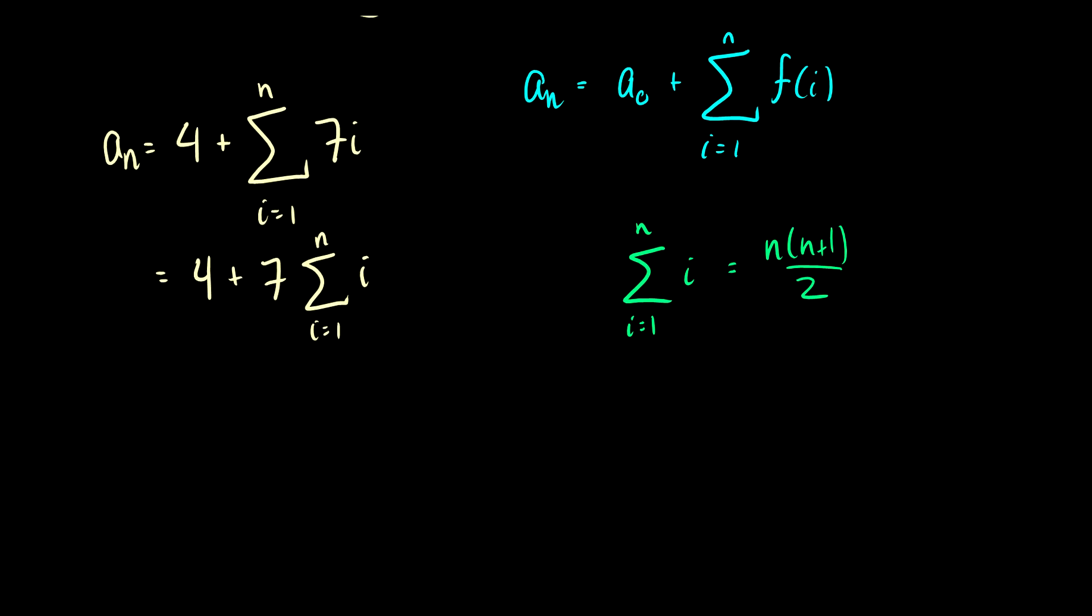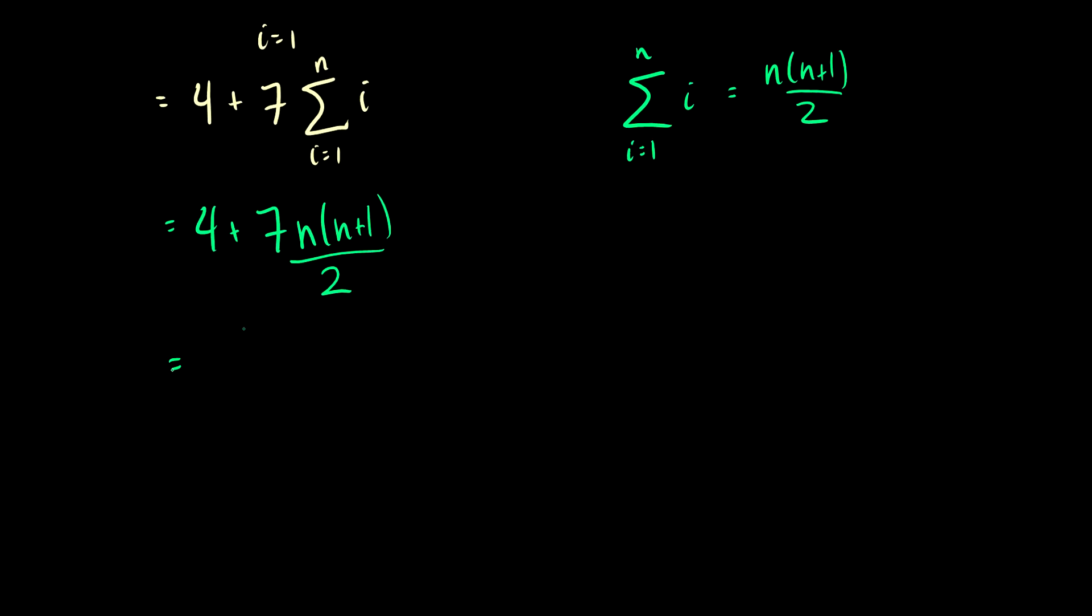So we can just substitute that in to our recurrence relation here. This will be 4 plus 7 times n times n plus 1 over 2. Okay, now all that's left is to simplify it. This will be 4 plus 7n squared over 2 plus 7n over 2. So this is the solution to our recurrence relation.